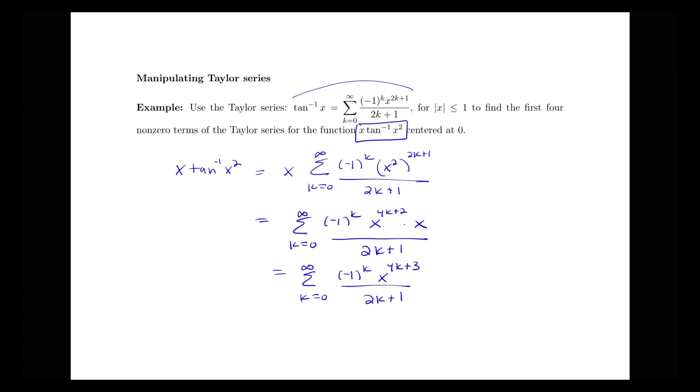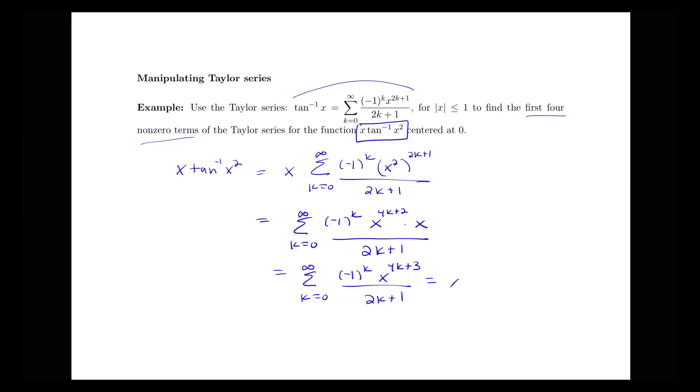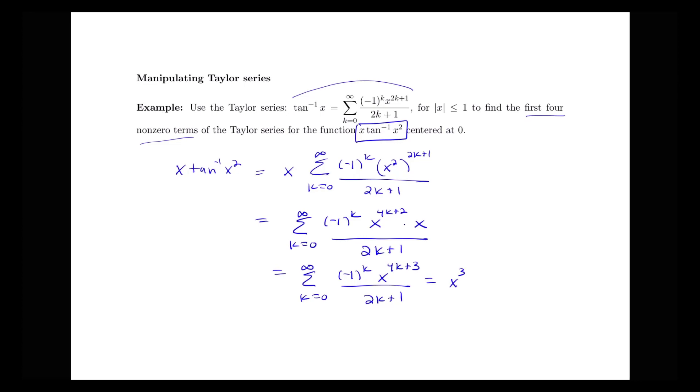And now this is asking us to find the first four non-zero terms. So we can just plug in some values of k here. So when k is equal to 0, we will have x cubed here, over 1. When we plug in 1, we're going to have minus x to the 7th here, all over 3, plug in 2. We'll have this positive x to the 11th, all over 5.